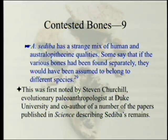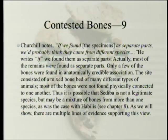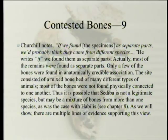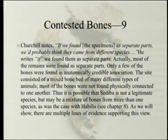This was first noted by Stephen Churchill, evolutionary paleoanthropologist at Duke University and co-author of a number of the Science papers describing sediba's remains. Churchill notes: 'If we found the specimens as separate parts, we'd probably think they came from different species.' Actually, most of the remains were found as separate parts — only a few bones were found in anatomically credible association. The site consisted of a mixed bone bed of many different types of animals, with most bones not physically connected. Thus, it is possible that sediba is not a legitimate species but may be a mixture of bones from more than one species, as was the case with Habilis.